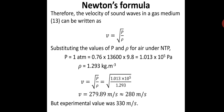Substituting K with p, we get v equals the square root of p/rho. At NTP, p equals 1.013 × 10⁵ Pascal and the density of air rho equals 1.293 kg/m³. Substituting these values gives a velocity of approximately 279.89 m/s, nearly 280 m/s. However, Newton himself found experimentally that the velocity of sound in a gas medium is around 330 m/s. This discrepancy was later addressed by Laplace, which we will discuss in the next session. Thank you.